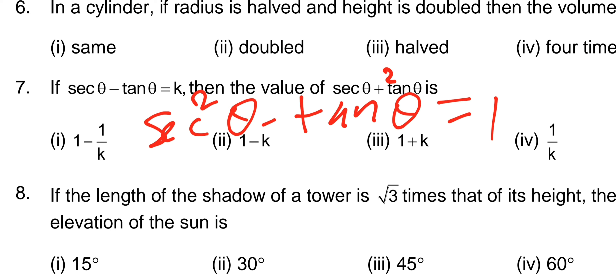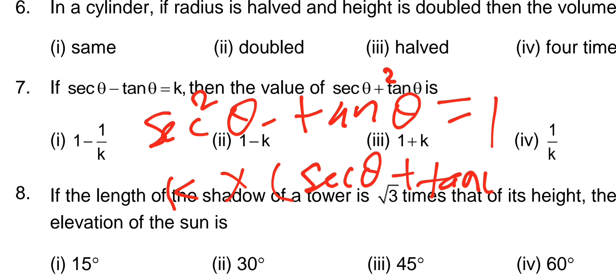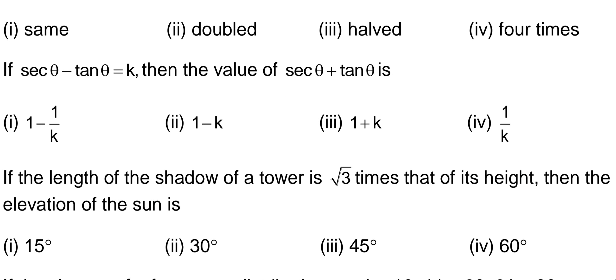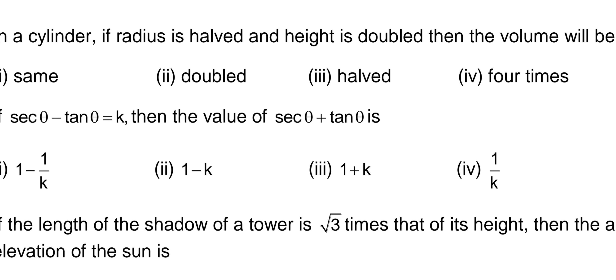Applying the formula: sec θ - tan θ = k, so sec θ + tan θ equals 1/k. Therefore my answer becomes 1/k — the fourth option is correct.